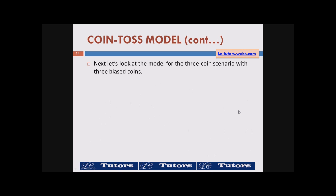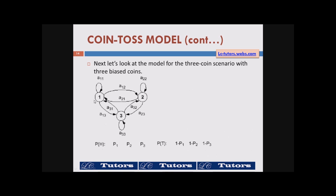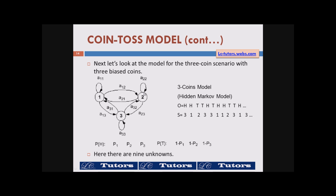Things become more complicated with a three coin scenario. There are about nine probabilities that are unknown, and these nine probabilities can be estimated by observation. Again, it is a hidden Markov model: the person has three coins behind the curtain, tosses one, and tells you the output — head, head, tail, tail, and so on — but we don't know which coin he was tossing. So a head can be from coin three or from coin one, and the selection depends on arbitrary probabilities given by another stochastic process.